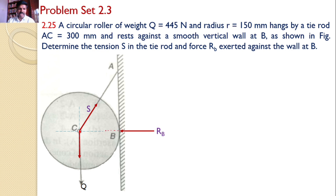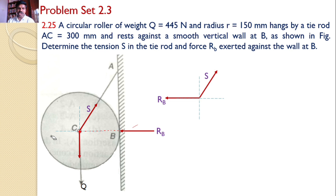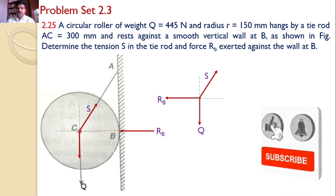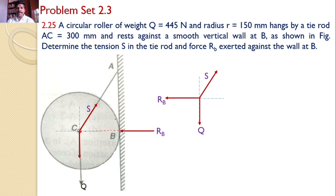If you extend RB, this will also intersect here. Now let us transfer all these forces onto the XY plane. First I am transferring RB, then the tensile force in the string S, and then the self weight Q. The system consists of three forces and all three forces are meeting at a particular point, so it is a concurrent force system and all three forces are divergent. So I can apply the concept of the sine rule. I have prepared a separate video on the concept of the sine rule — please watch it from RK Tutorials.